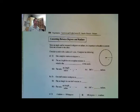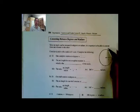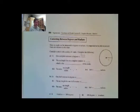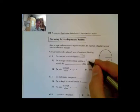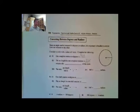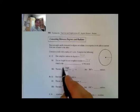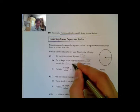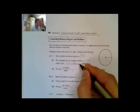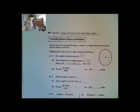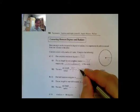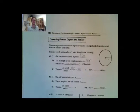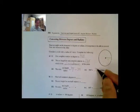Now if we look at this a little bit more: one complete rotation is the same as 360 degrees. The arc length of one complete rotation is going to be my circumference, which is 2 pi r — 2 pi multiplied by the radius. So the ratio of arc length over radius is the same as my circumference, which is 2 pi r divided by r, giving me 2 pi. So 360 degrees equals 2 pi radians.